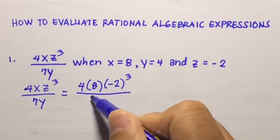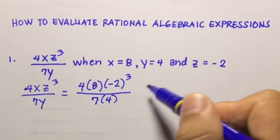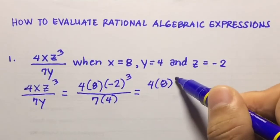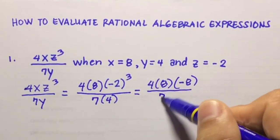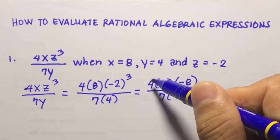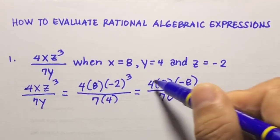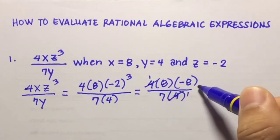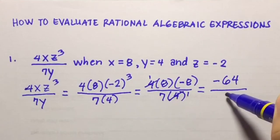This will be equal to 4 times 8, and negative 2 cubed is negative 8, over 7 times 4. In the numerator we have 4 and in the denominator we have 4, so we can cancel those — leaving 1. So our answer here will be 8 times negative 8, which is negative 64 over 7.